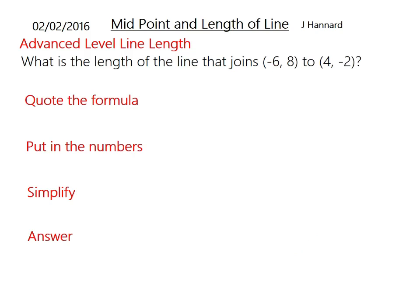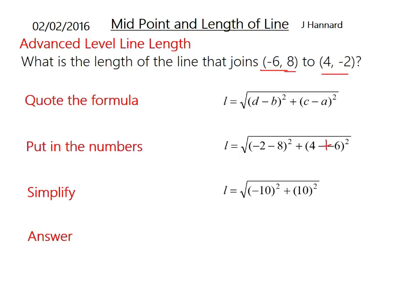Let's do another one. What is the length of the line that joins minus 6, 8 to 4 minus 2? Quote your formula: the root of back take back squared added to front take front squared. Put in your numbers: minus 2 minus 8 and 4 minus minus 6. Double negative there, that's going to become a plus. We end up with length equals the root of minus 10 squared added to 10 squared, which is the root of 100 plus 100 which equals root 200. Split your surd into root 100 root 2 which equals 10 root 2. The examiner would give you the benefit of the doubt if you just wrote root 200 in an exam, but most modern calculators will give it to be 10 root 2 anyway. Remember you are allowed a calculator in the OCR FSMQ exam.